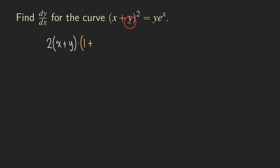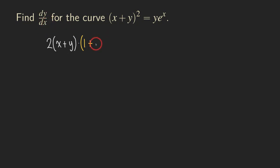Now what about the y? We are also going to apply the power rule for y, so it becomes just a one. But we also need to remember that y is defined implicitly as a function of x. Assuming that it's differentiable, we are going to multiply by the derivative of y with respect to x, which gives us dy/dx. So we get one from the y, times dy/dx. And that's the derivative of the inner function.